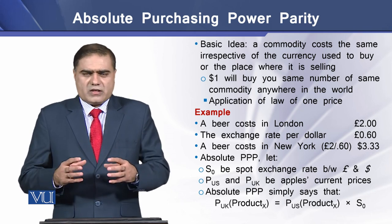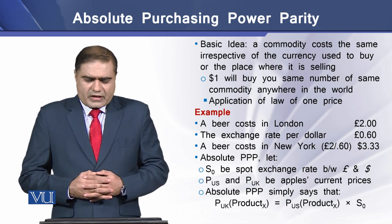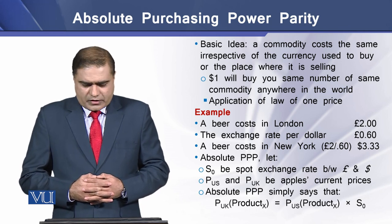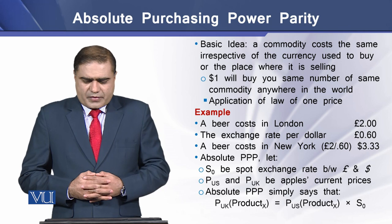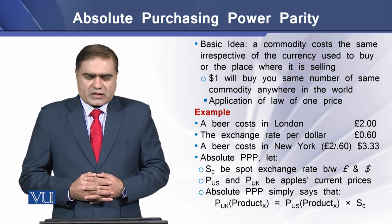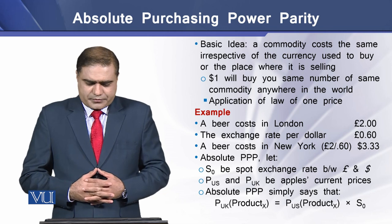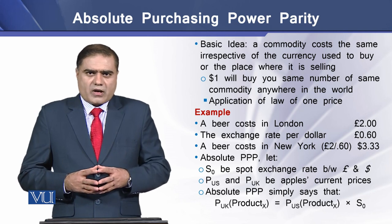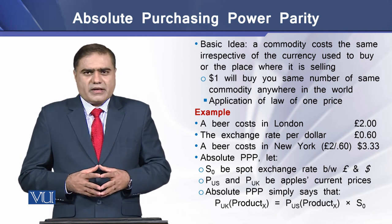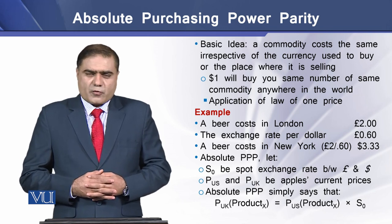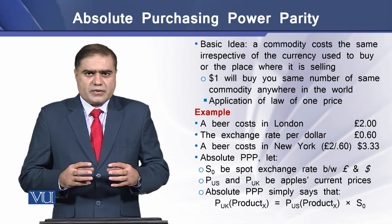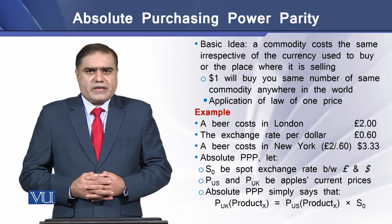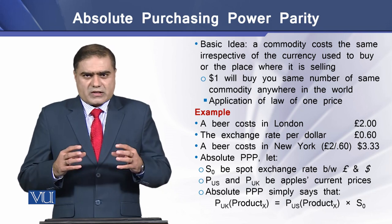To understand this concept, let's take an example. We have an example of beer that costs in London at £2 per unit, whereas the exchange rate per dollar is equal to £0.60. Using this data, if we determine the price of a beer in New York, it comes to the value of £3.33 per unit of beer in New York.